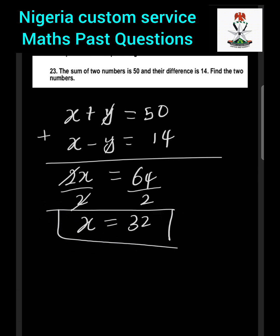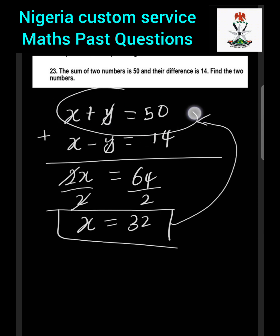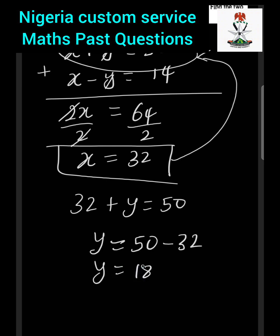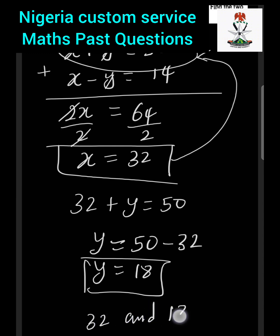To find y, we substitute x equals 32 into equation one: 32 plus y equals 50. Taking 32 to the right-hand side gives y equals 50 minus 32, which is 18. Therefore, the first number is 32 and the second number is 18.